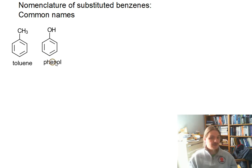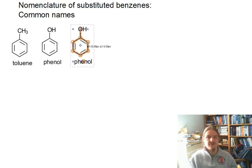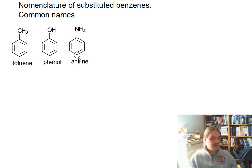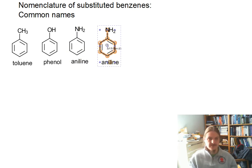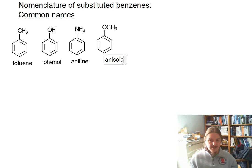The alcohol is called phenol. In fact, phenol is the IUPAC preferred name. The amine is called aniline — so instead of benzenamine, which is the more IUPAC name, this can be called aniline. And then even some simple ethers, like the methyl ether, is called anisole.